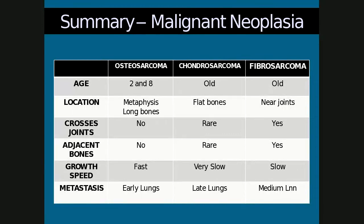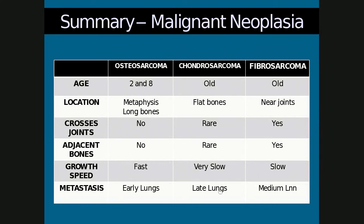In summary, comparing the most common malignant neoplasms: chondrosarcoma and fibrosarcoma affect older dogs, whereas osteosarcoma is bimodal and can occur in younger dogs. Osteosarcoma affects the metaphyses of long bones, chondrosarcoma the flat bones such as skull and pelvis, and fibrosarcoma tends to be closer to joints. Osteosarcoma won't cross joints; chondrosarcoma rarely does; fibrosarcoma can. Fibrosarcoma can also affect adjacent bones, unlike the other two. Osteosarcoma is the most aggressive with the fastest growth and earliest metastasis — very early to the lungs. Chondrosarcoma metastasizes later to the lungs; fibrosarcoma metastasizes later to the lymph nodes. This concludes the lecture on musculoskeletal neoplasia.